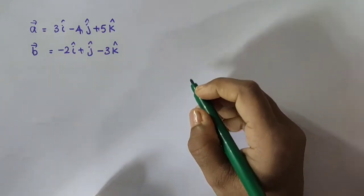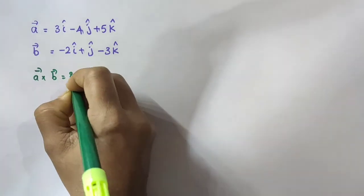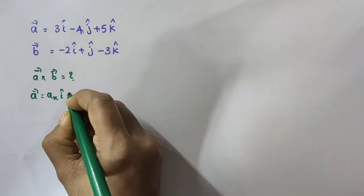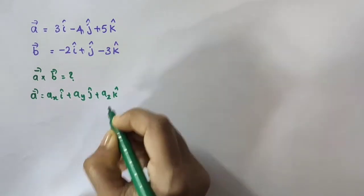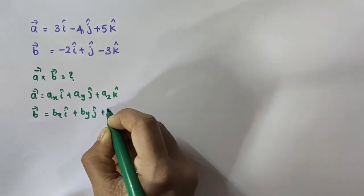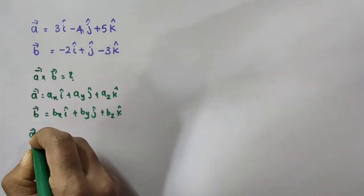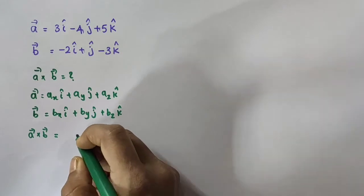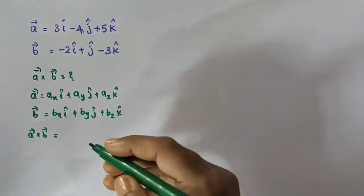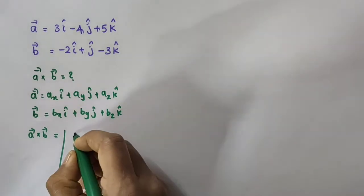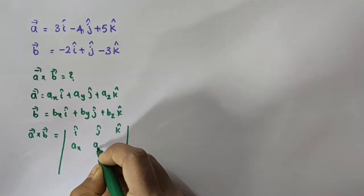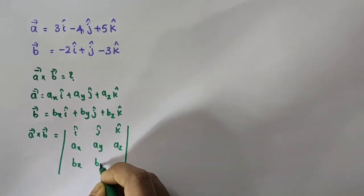Next, let us find out vector A cross vector B, that is the vector product of these two vectors. In general, vector A cross vector B can be found using the determinant form, which we have already discussed in the previous video on vector product or cross product — I will provide the link in the description box. The determinant form is: i-cap, j-cap, k-cap in the first row; Ax, Ay, Az in the second row; Bx, By, Bz in the third row.